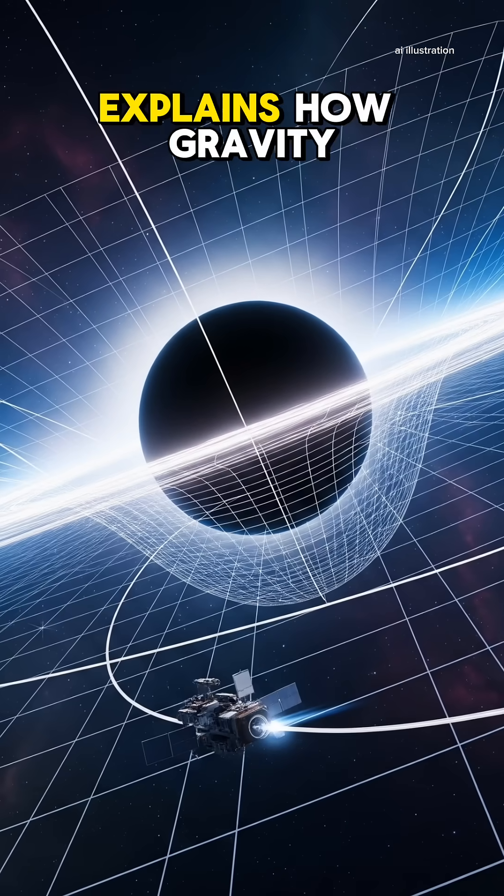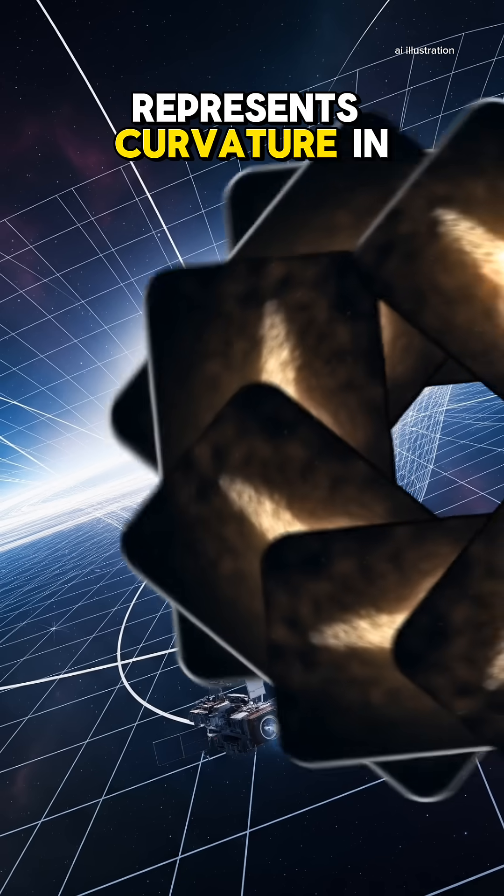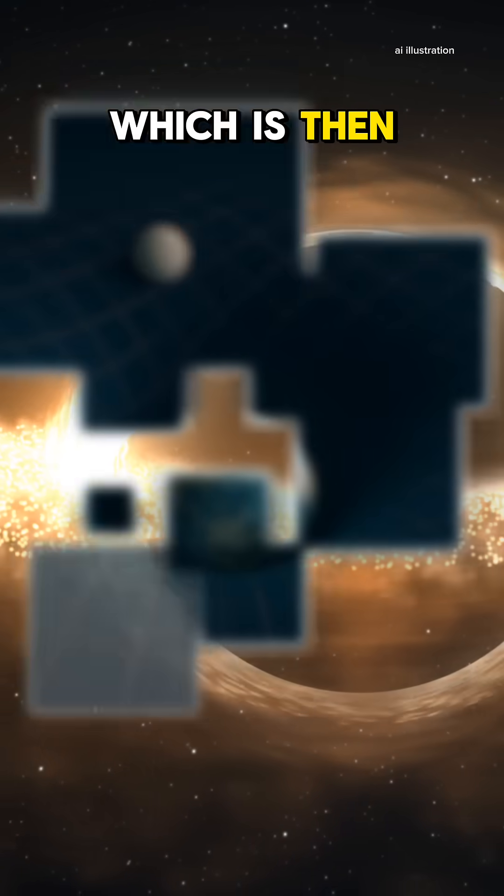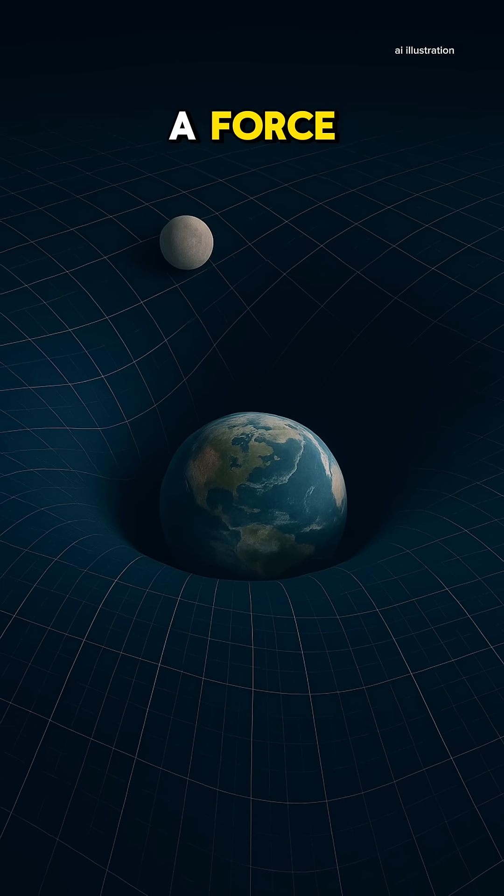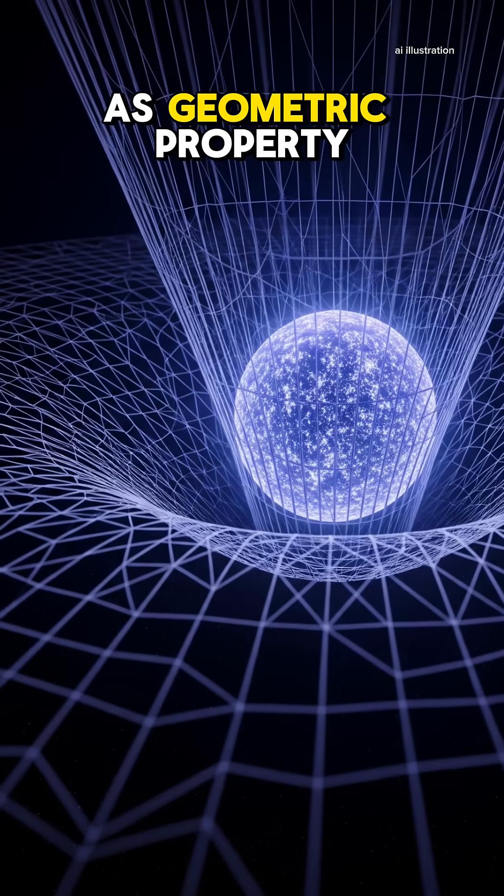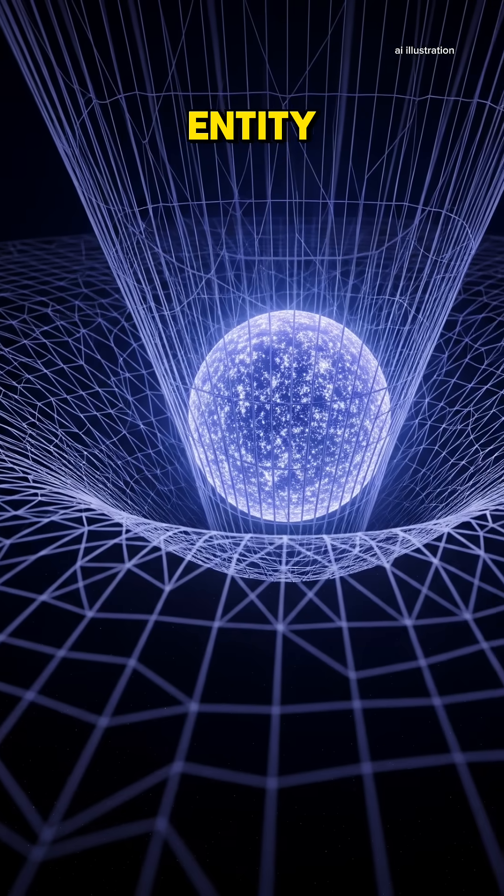General relativity, on the other hand, explains how gravity represents curvature in space and time created by mass and energy, which is then followed by objects. So rather than a force, it describes gravity as a geometric property of the four-dimensional entity known as space-time.